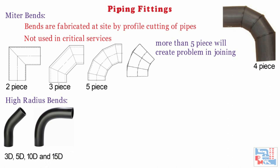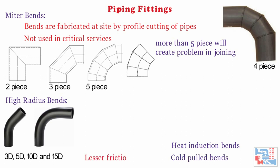These large-radius bends are usually used in viscous and slurry services like paint and chemical chips flowing through pipes. This fitting is also called a heat induction bend or cold-pulled bend. These have less friction losses compared to standard 90-degree elbows.